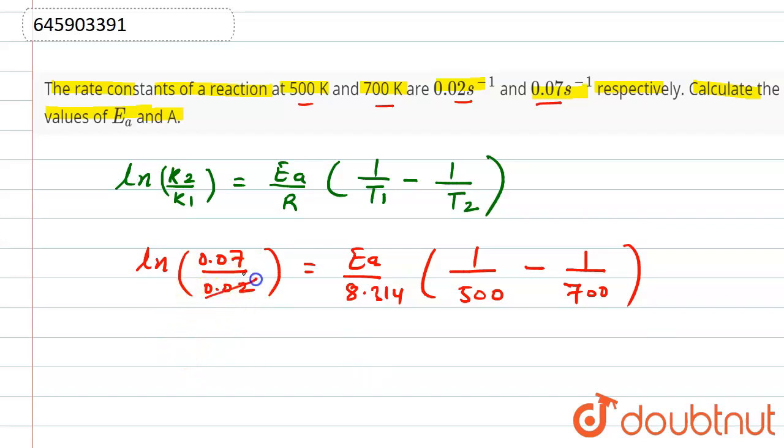It will get cancelled out by 3.5. So ln of 3.5 is there, that will be multiplied by 8.314. Take the LCM. LCM will be 500 into 700. So that will be divided by 700 minus 500, that means 200.